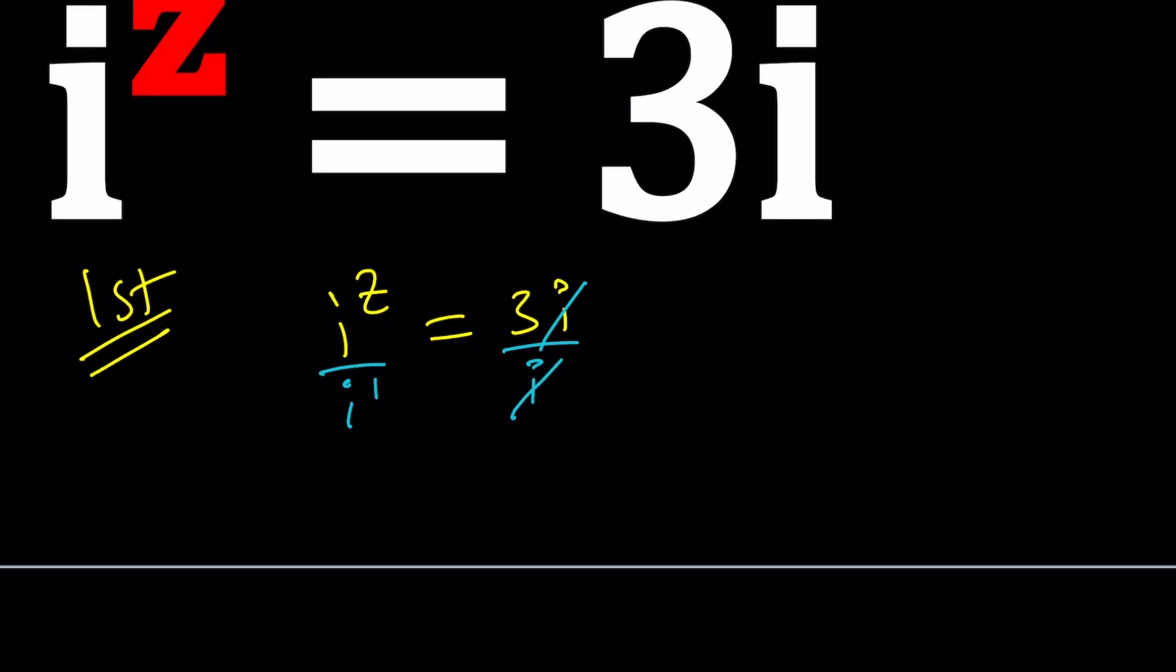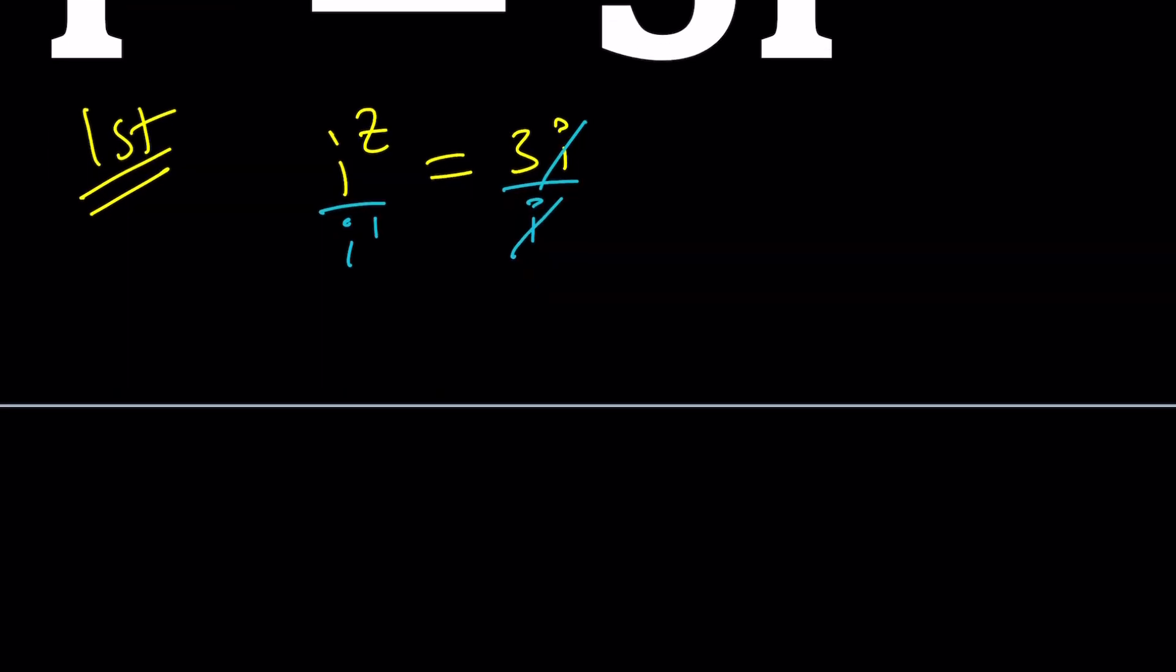When you divide by i, you're dividing by i to the power 1 so you're going to subtract the exponents. I guess the same rules apply. i to the power of z minus 1. I'm trying to be careful here because complex numbers are somewhat different. Sometimes I do things that normally is done with real numbers but they don't apply to complex numbers. We got this equation which kind of looks simpler maybe.